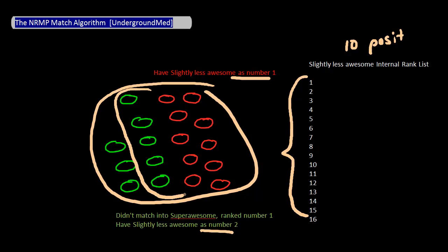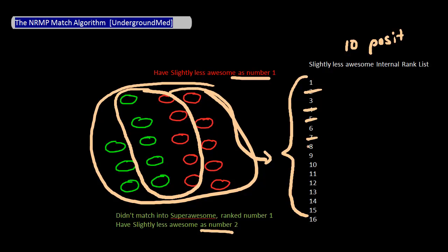Whether or not those students had Slightly Less Awesome as number one or two doesn't really factor into Slightly Less Awesome's internal rank list. Notice that Slightly Less Awesome's internal rank list includes some people who already matched into Super Awesome — let's say those are students two, four, five, seven, and eight. As a result, these individuals are ignored, which means Slightly Less Awesome will have to go further down in its rank list to fill its ten positions. The main point here is that a pool of students that potentially matches into a school includes everyone who places that school as their number one, or didn't match into their number one but had that school as their number two, or didn't match into their number one or two but had that school as their number three, and so on.